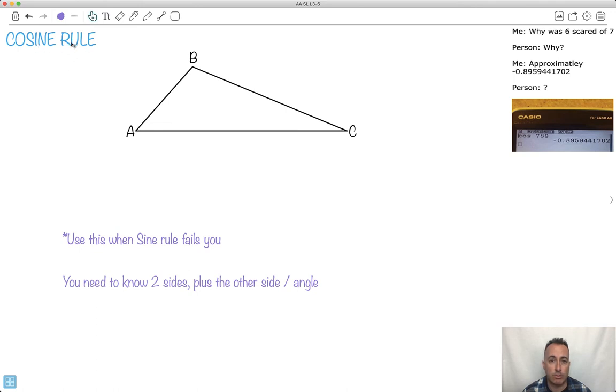I'm going to be showing you the cosine rule, which is what you should use when the sine rule fails you. This is all in the interest of trying to solve triangles and trying to figure out sides or angles.